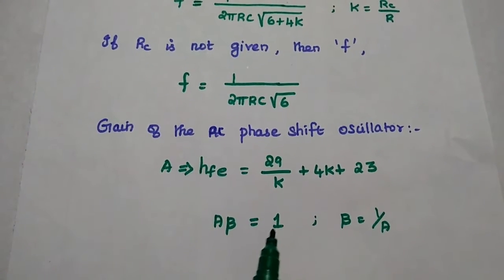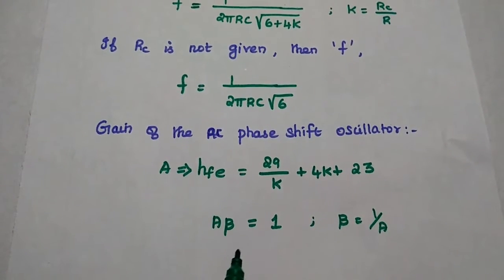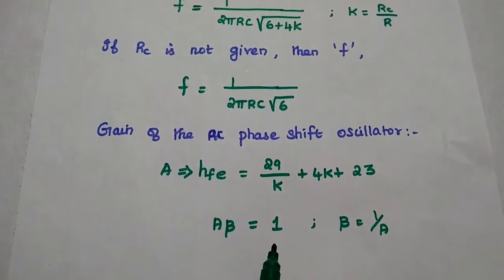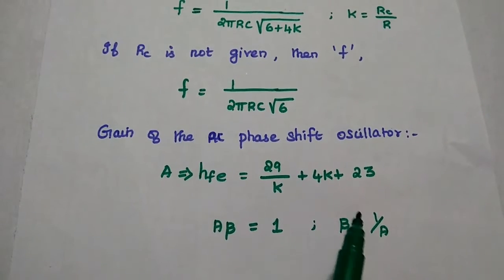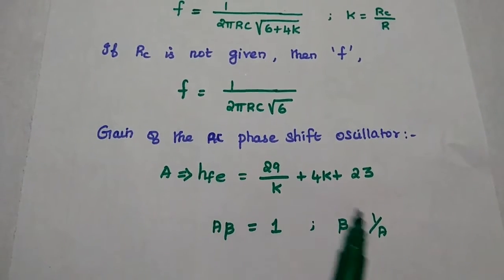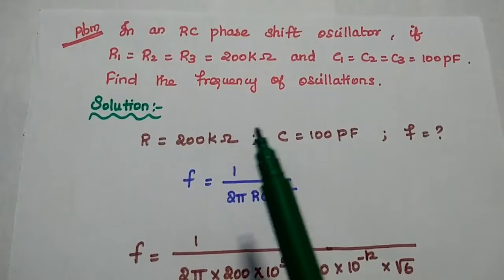We can simply consider K value as 0 here. The gain of the RC phase shift oscillator, represented as A or forward gain HFE, is equal to 29 by K plus 4K plus 23. The feedback factor: since A beta is equal to 1, we can get beta is equal to 1 by A.